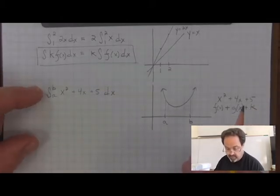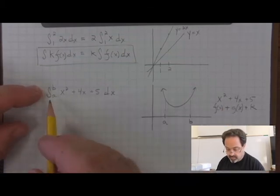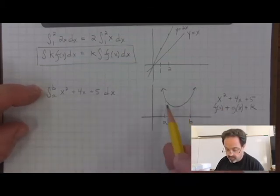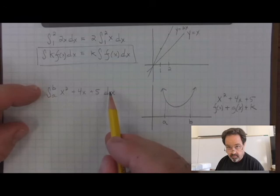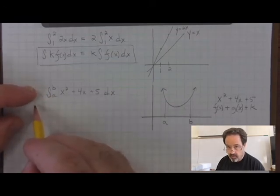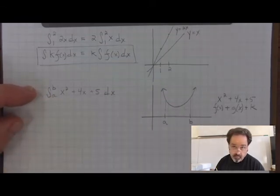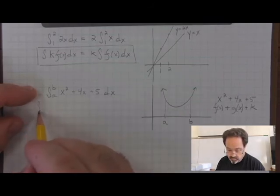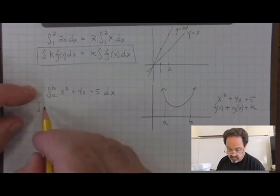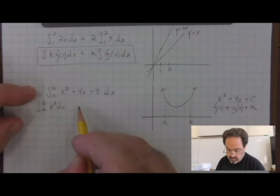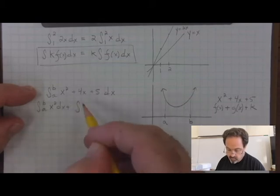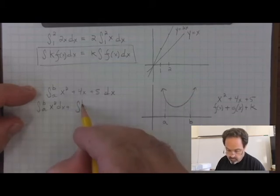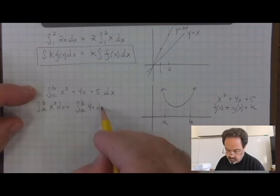In this case, we could write the area under the curve of the quadratic as the area under the curve of those three distinct functions. In other words, I could break up this integrand into three separate integrals, each with its own term, and add them together.